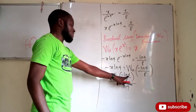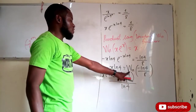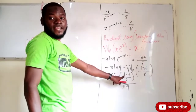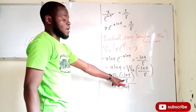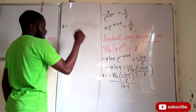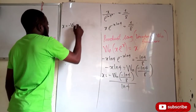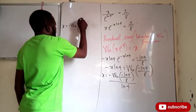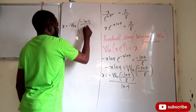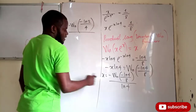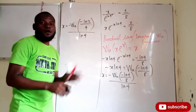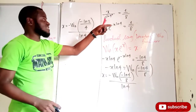This can be simplified since ln 4 equals 2 ln 2, and the 2 will come down so that it divides what is in the numerator. We can then conclude that x equals negative W of (negative ln 2 over 4), all divided by ln 4.